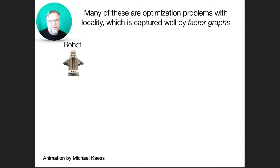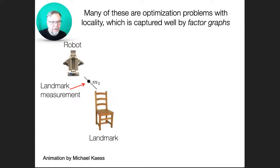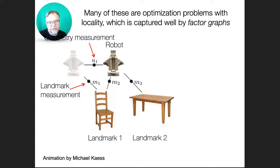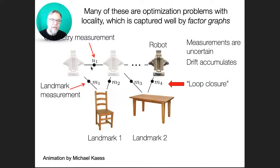So why factor graphs? The reason I like factor graphs is that a lot of the problems that we face in robotics can be represented as a factor graph. A lot of these problems are actually optimization problems with locality, and that's the key property that's captured by these factor graphs. And this sparsity is going to be the key to fast computation.